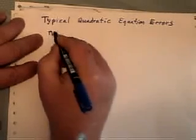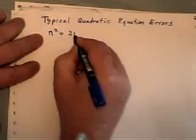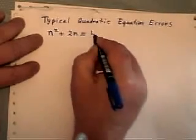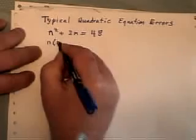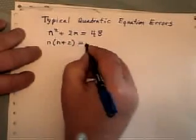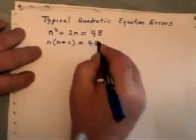The first one that I see a fair amount of time is people will start factoring and the right-hand side is not equal to zero.